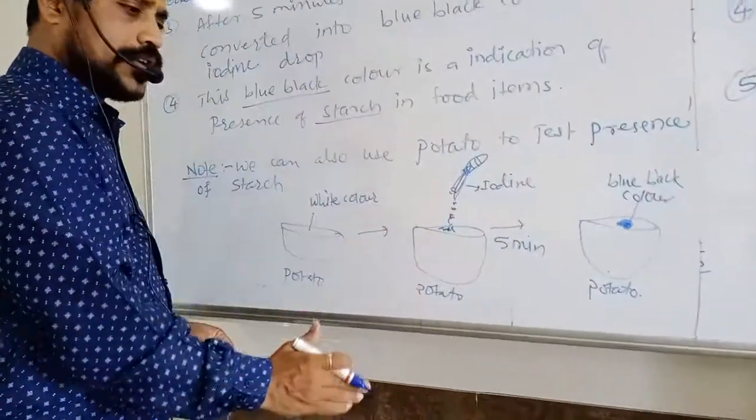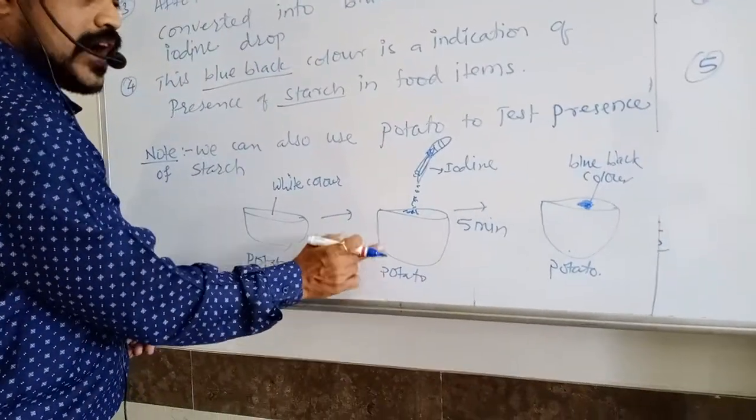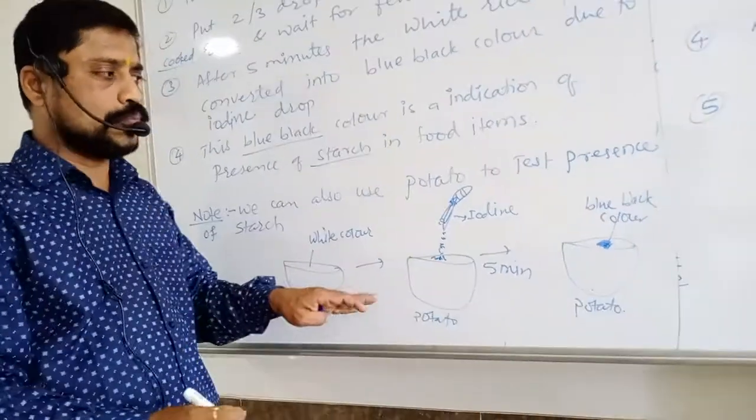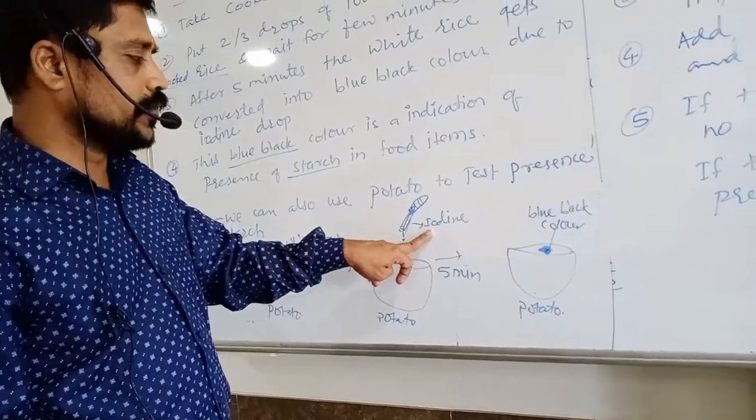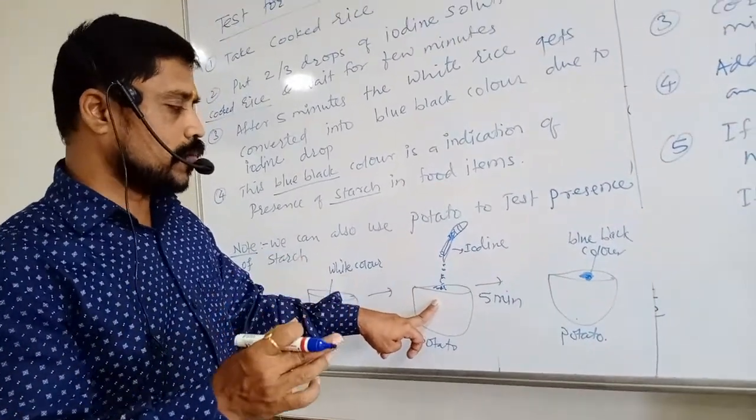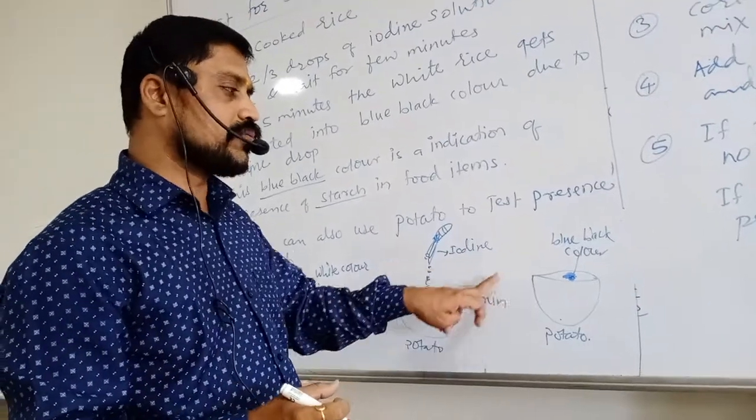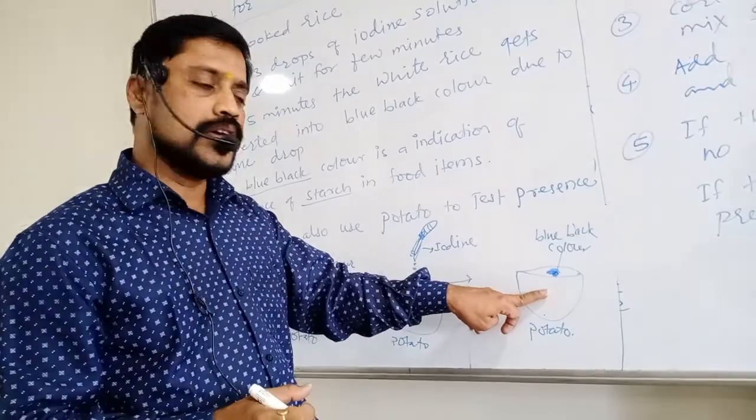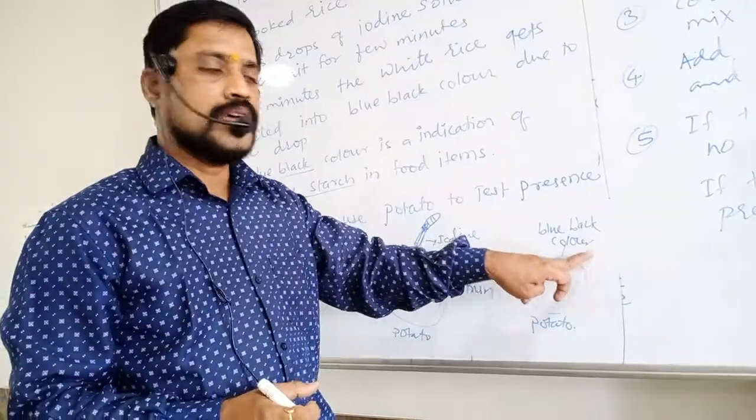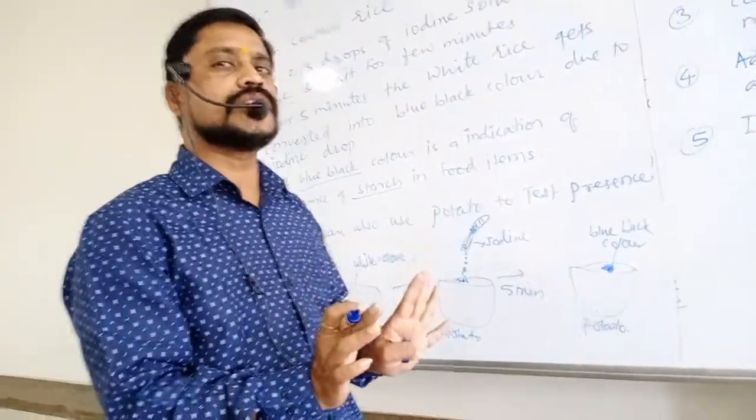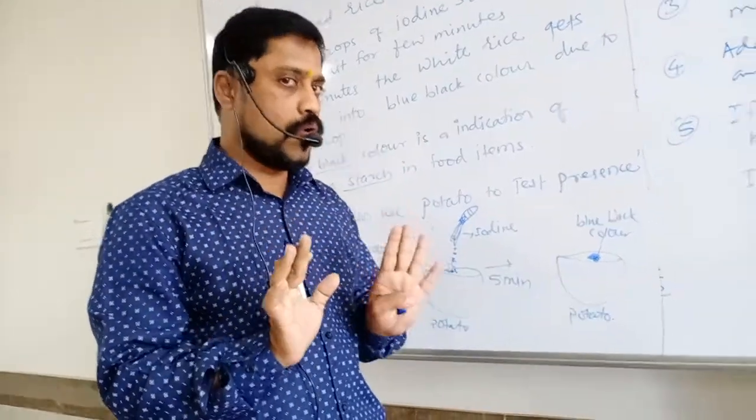Take potato. Cut it. And use half semicircle of potato. And on it with the help of dropper we can put iodine solution on it, 2-5 drops. And wait for 5 minutes. After 5 minutes this whitish part will be converted into blue black color. This blue black color is the indication of starch in a given food item.